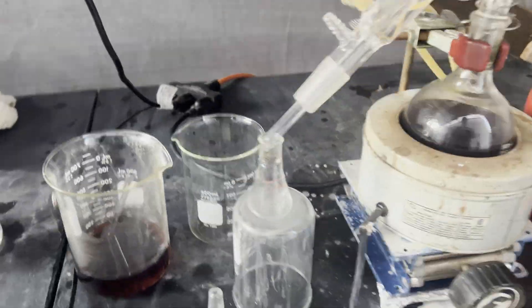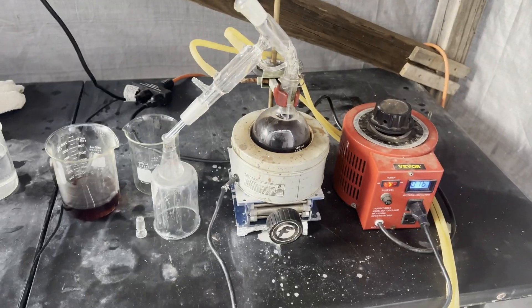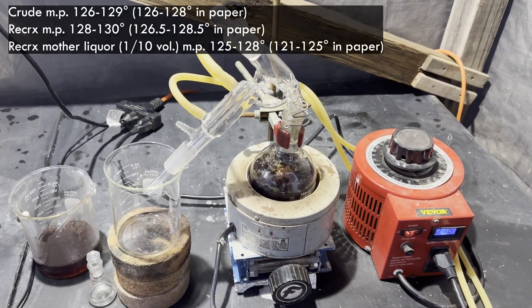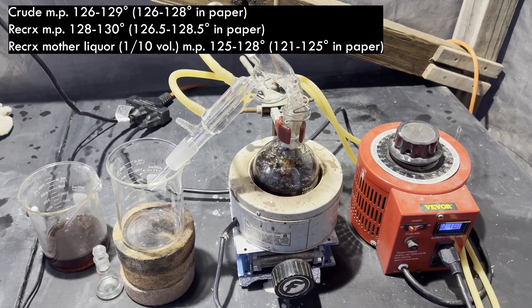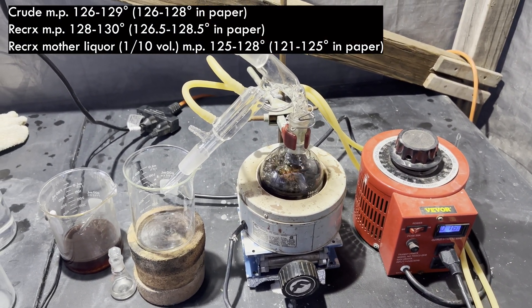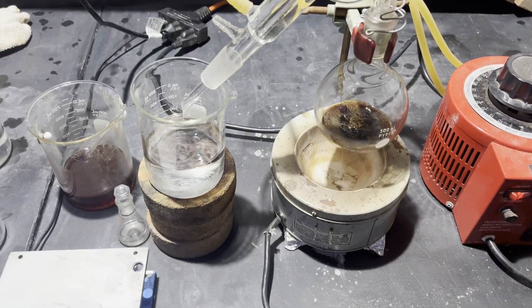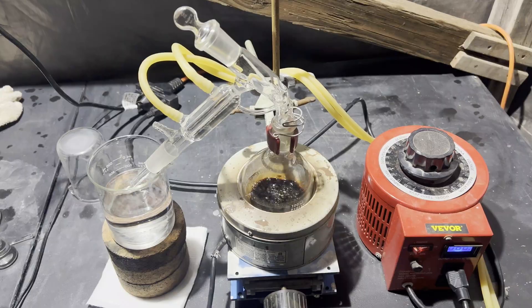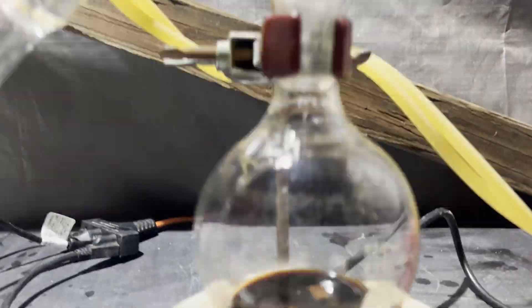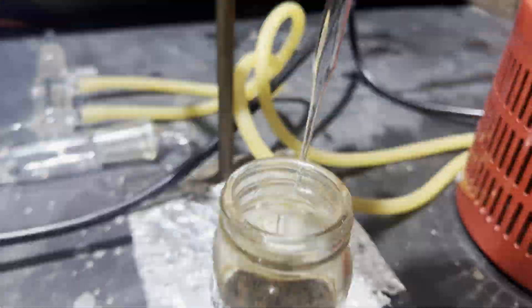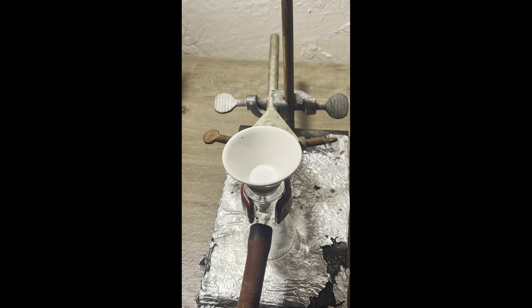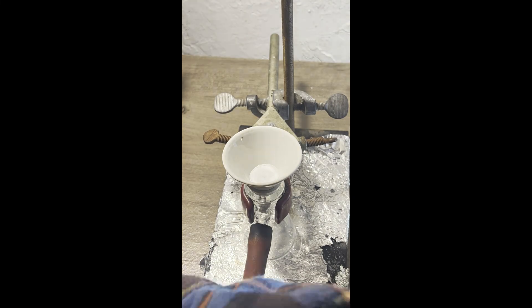I boil the filtrate down to one tenth of its volume to get a second less pure crop of crystals. Here are all the uncorrected melting points. I'm not sure why they're higher than the literature values, especially since they're supposed to be cream or cream pink colored rather than the light brown that mine are. Could be that they're uncorrected, but usually colored impurities or impurities in general lower the melting point of a sample. Oh well.